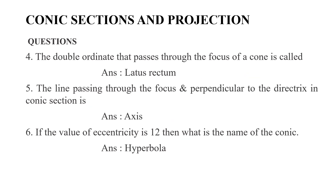The double ordinate passing through the focus is called the latus rectum. The line passing through the focus and perpendicular to the directrix is the axis of the conic section. The eccentricity value greater than one is called a hyperbola.